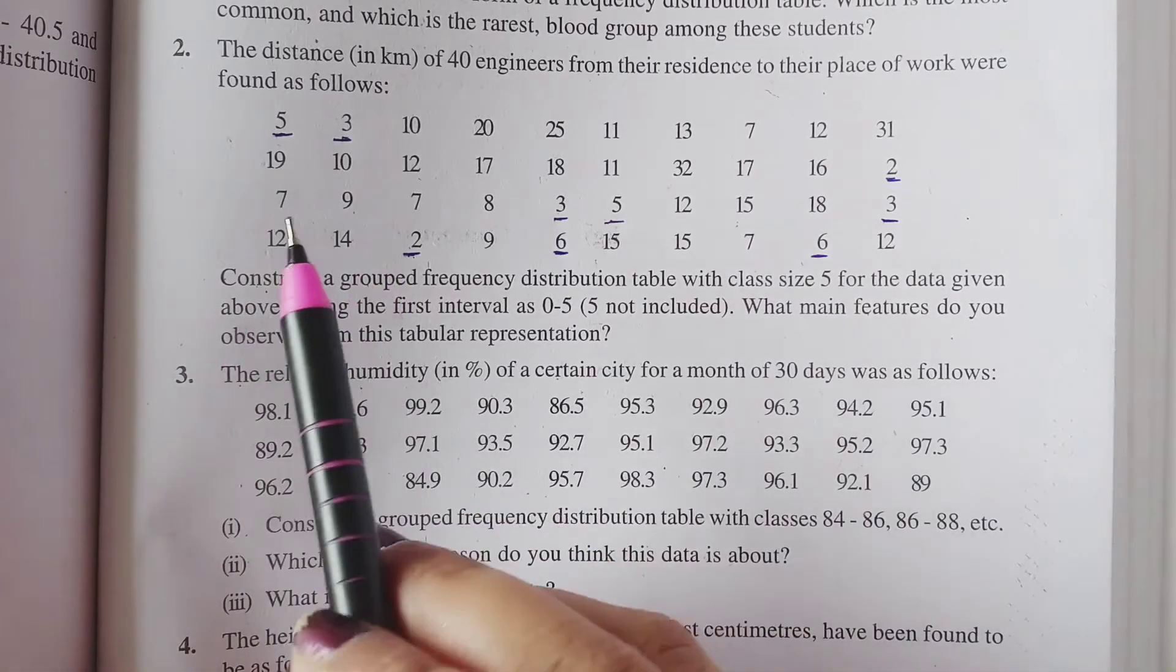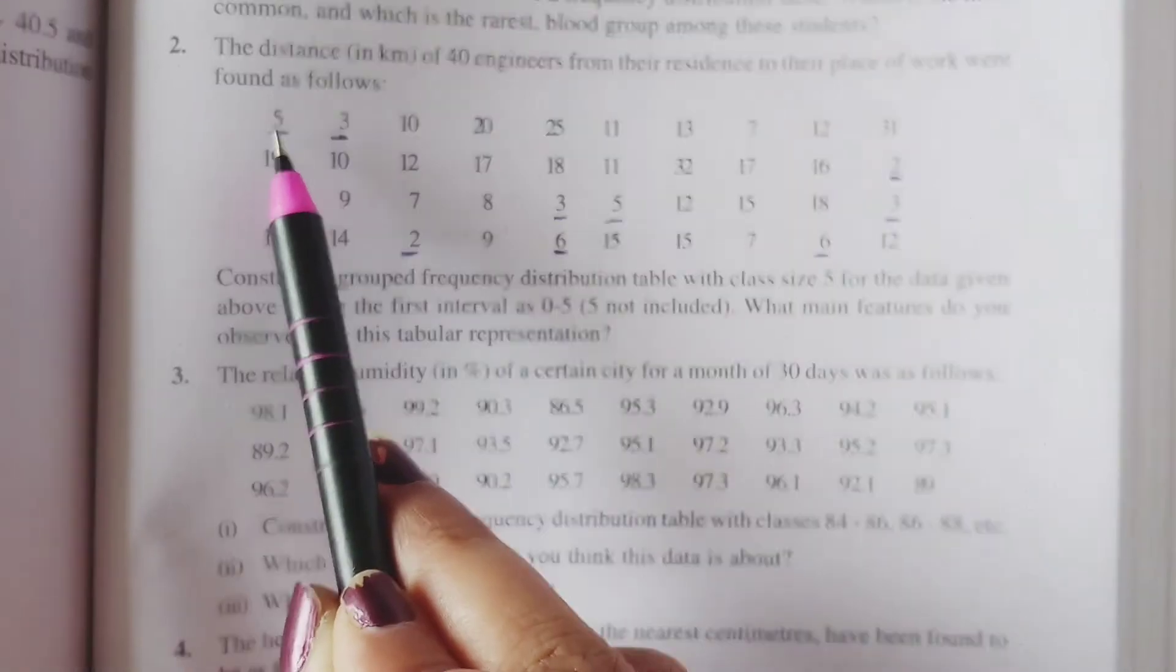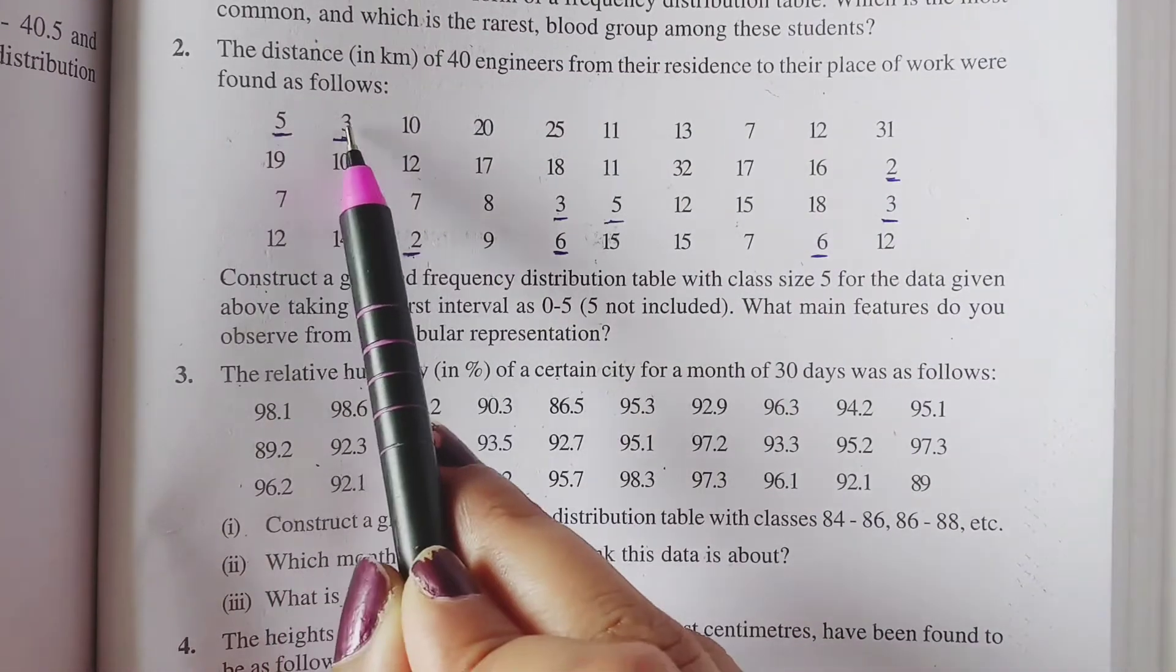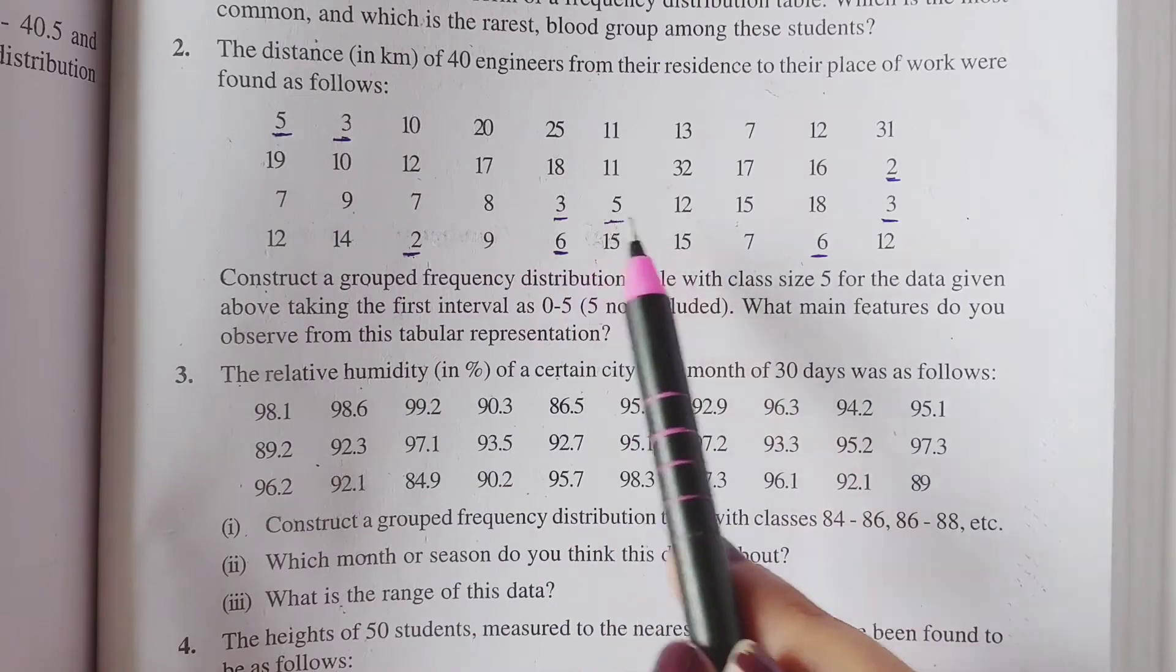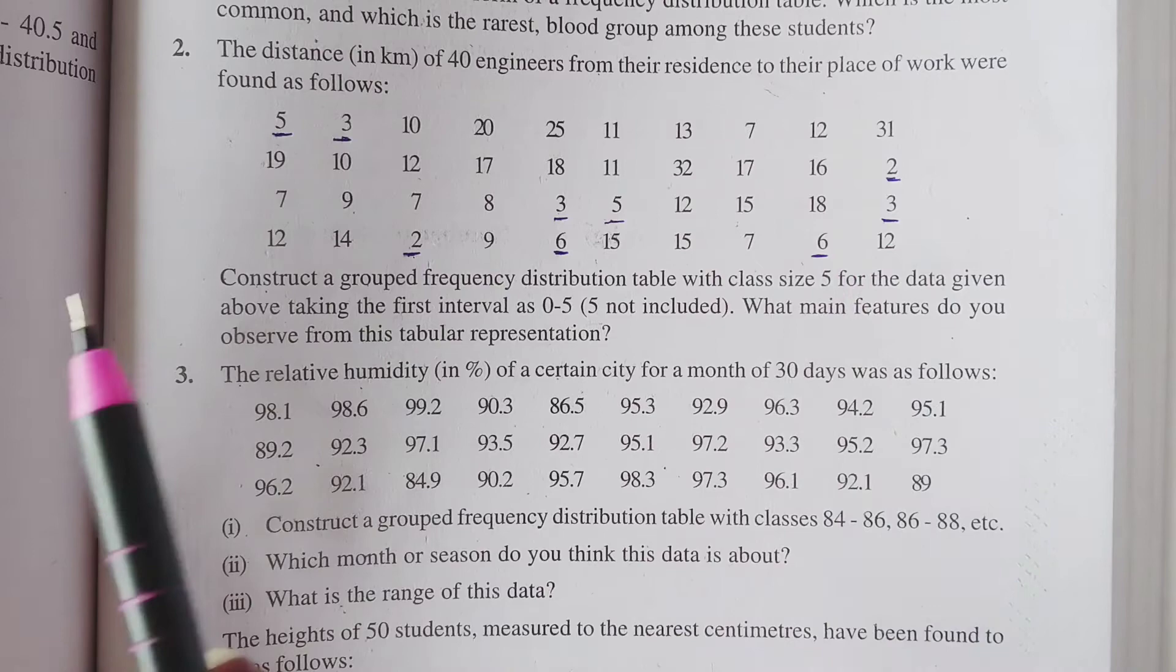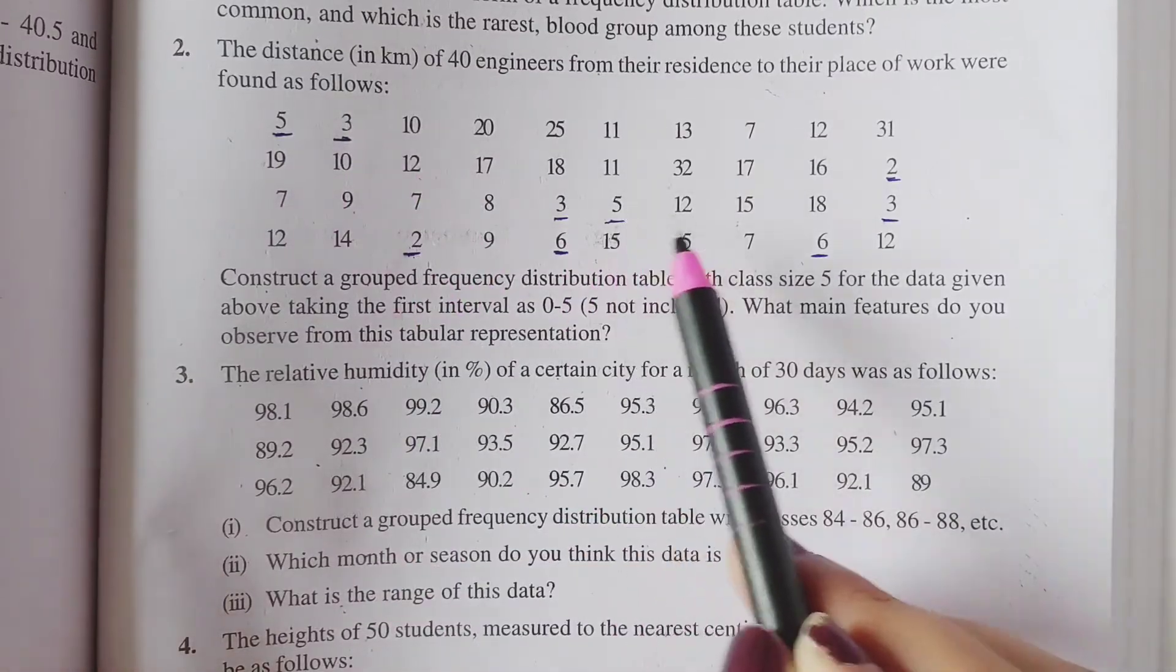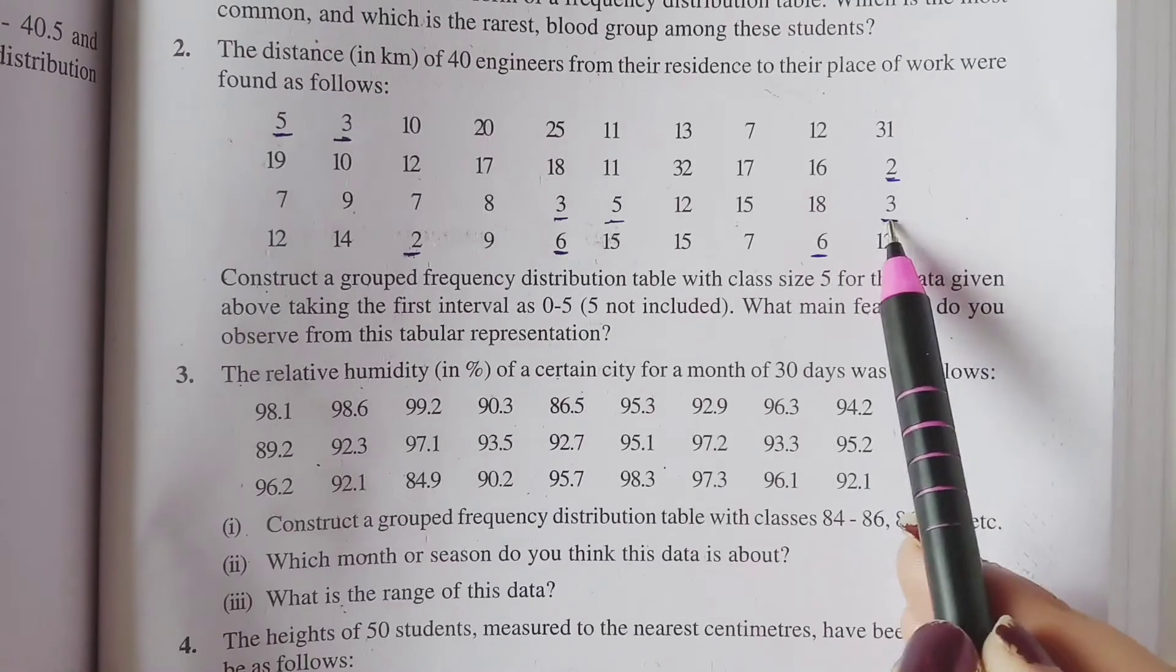Jo first probability hai, woh hai less than 7 km from her place of work. Yani ki woh uska jo distance hoga, woh 7 km se kam hoga. Wiese engineers kitnay hai? So let's see in the table. Jo 7 km se less than distance cover karti hai, wiese engineers ke kaun se hai? Yaha pe dekho, 5, 3, 2, 3, 6, 5, 6, 2 and 3.